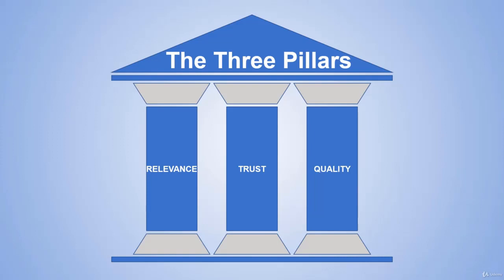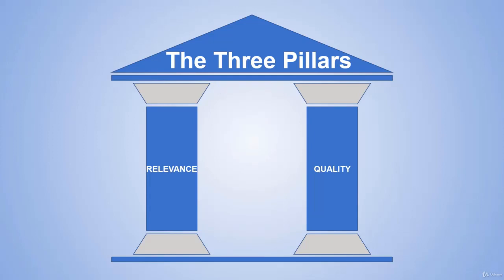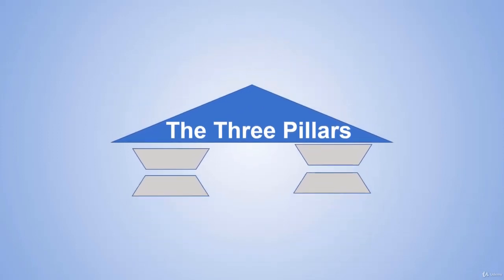Think about what would happen if you remove some bricks from your house. Your house would collapse immediately. That's exactly the case with the three pillars of SEO. If one of them falls, all the others follow. They are all connected to each other. Take that as a rule: all three of them must happen in order to get a good and strong SEO effect.